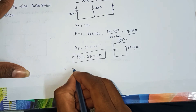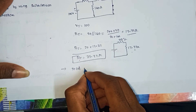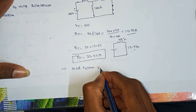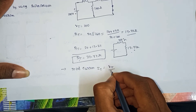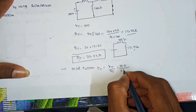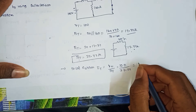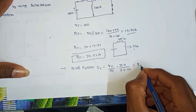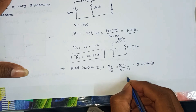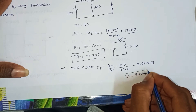Total current: I total equals V total by R total equals 100 by 37.77, so the answer is 2.65 amps. So I total equals 2.65 amps.